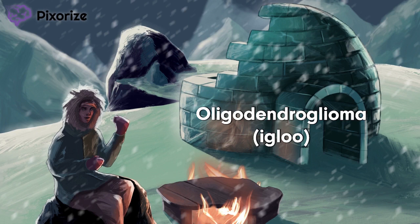The prefix oligo helps me remember that oligodendrogliomas originate from oligodendrocytes. By the way, an oligodendrocyte is a type of glial cell — the cells that make myelin. This igloo-dendroglioma is the visual anchor for our scene, which should help you remember both the tumor, oligodendroglioma, as well as its cell origin, oligodendrocytes.